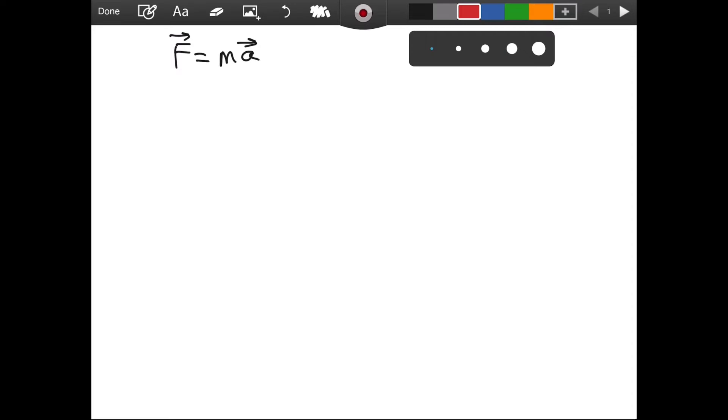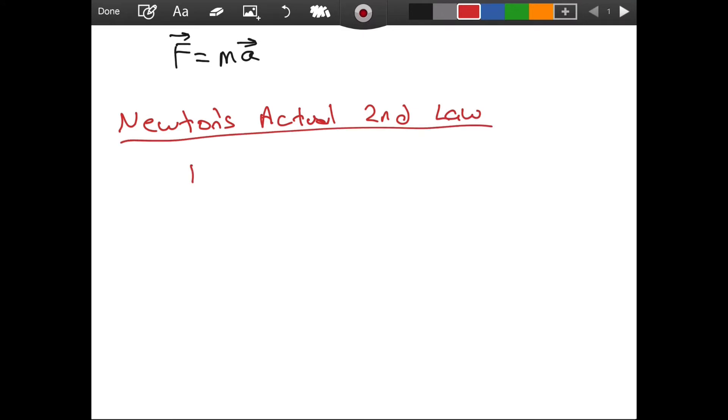So the actual Newton's second law, Newton's actual second law, it states that force F is equal to the time derivative of a quantity called p, and p is a vector. So you're asking perhaps, what is p? Well, p is defined as mass times the velocity, and it is called the momentum.